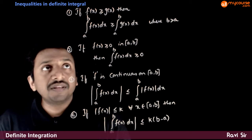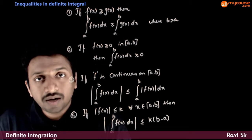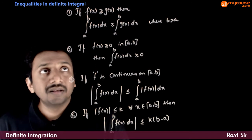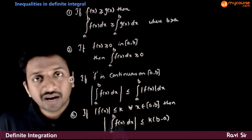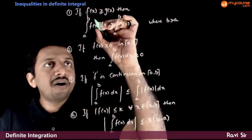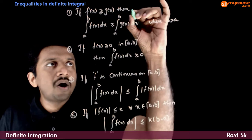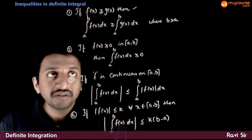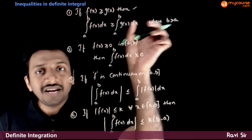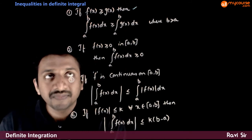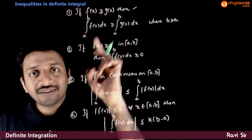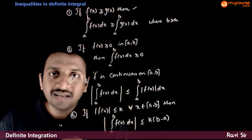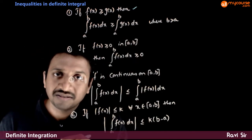The next topic deals with inequalities in definite integrals. The statement goes like this: if f(x) is always greater than or equal to g(x) within the interval [a, b], then the integration from a to b of f(x)dx is always greater than or equal to the integration from a to b of g(x)dx.